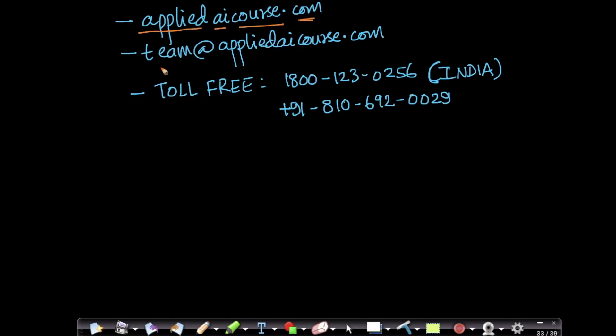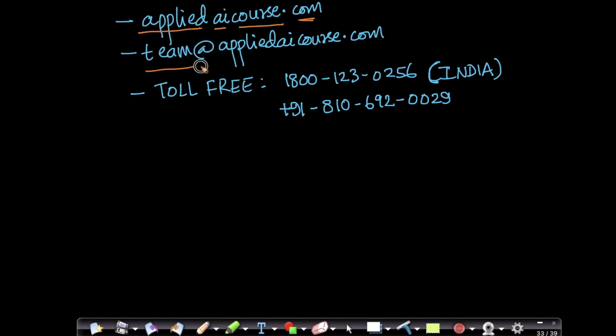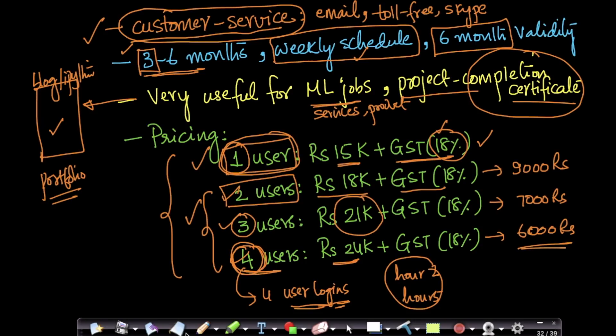Similarly, if you are looking for a group registration, please email us at team at appliedAICourse or any questions you have about our machine learning projects. Please email us at team at appliedAICourse for group registration, specifically for group registrations. So here group registrations basically mean groups of two, three or four students. Please email us with all the details that you need so that we will help you get the group registration at a deep discount like this.